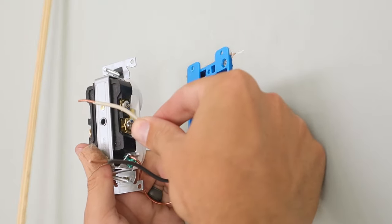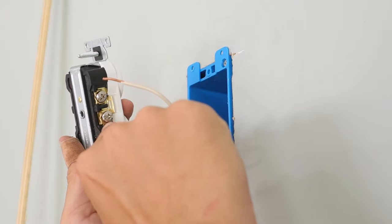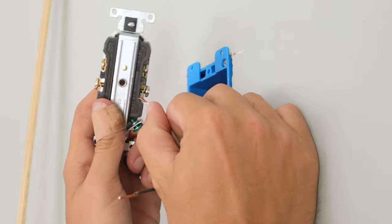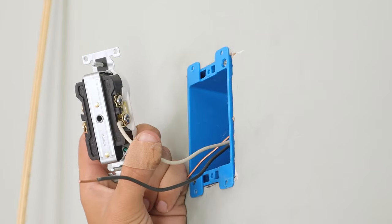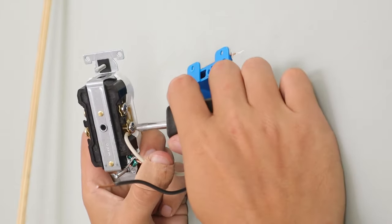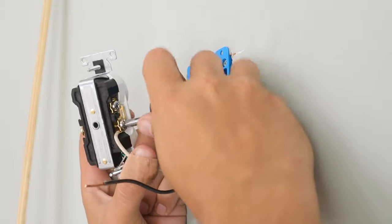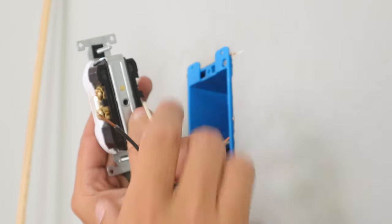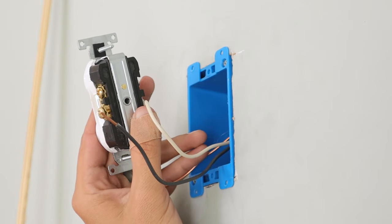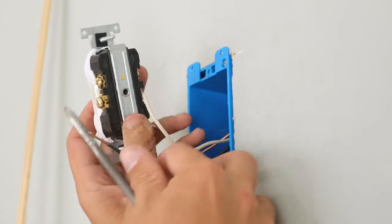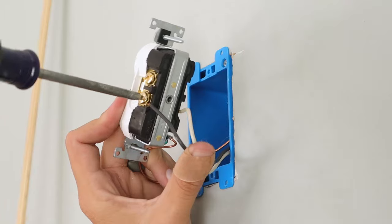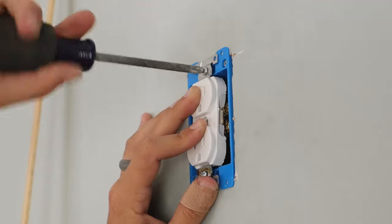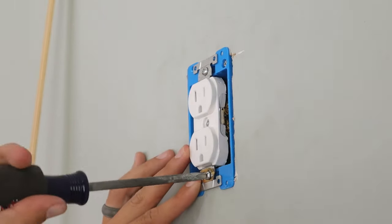Now I'll connect this white neutral wire over here where these silver screws are. It's just going to push in underneath that plate in the back, and once it's underneath that plate I can tighten down the screw on top of it. Same thing with this black feed wire - it's gonna go underneath the plate over here on the side where the terminals are a brass color. Push that up underneath that plate and then tighten down that terminal like I did on the other side. Now this outlet is wired up and can be pushed back into the box.